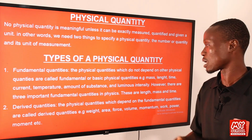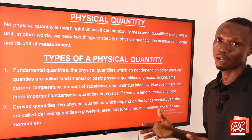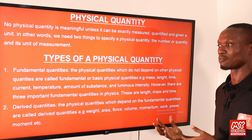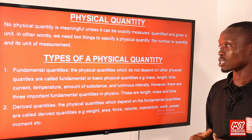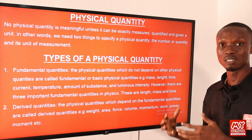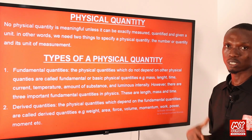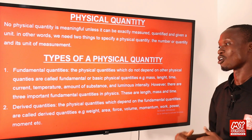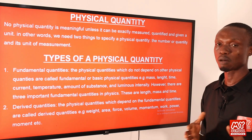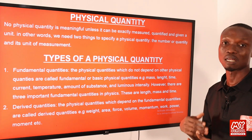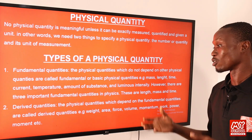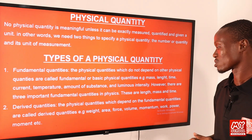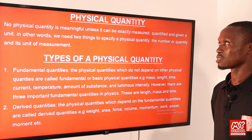Examples of fundamental quantities are mass, length, time, temperature, amount of substance, etc. Then the second type of physical quantity is known as derived quantities. So these derived quantities depend on other quantities for their definition — meaning these quantities cannot stand alone. A good example of such quantities is weight, area, force, momentum, etc.